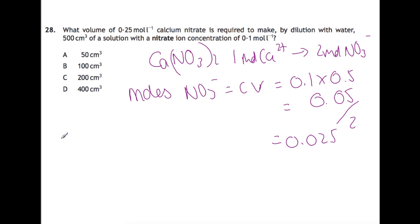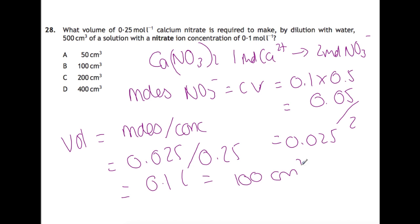So now we need to know what volume of our original solution we need. So we'll have volume is moles divided by concentration. We have 0.025 moles of calcium nitrate needed. And we have a concentration of 0.25. So when we do that, we get 0.1 liters, which is the same as 100 centimeters cubed. So the answer is B.